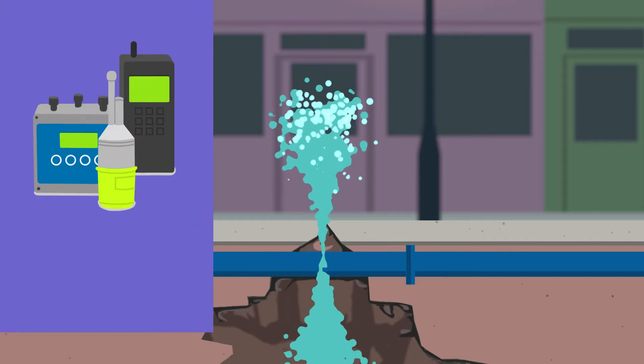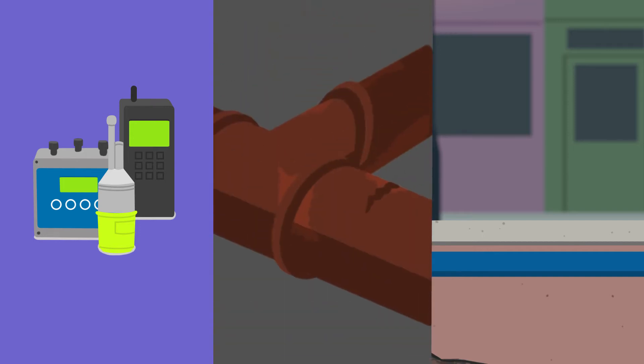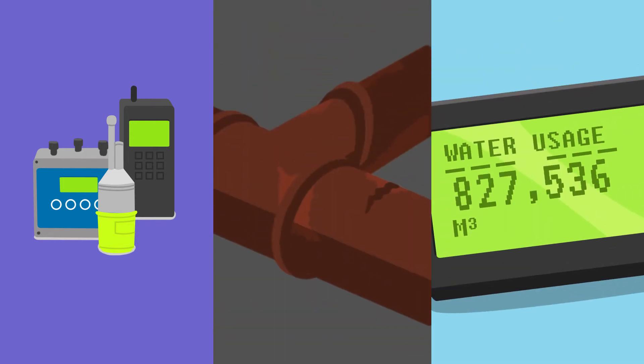Despite advances in technology and detection, leakage remains an intractable and worsening problem as networks age and demand increases. It's hard to find until the leak is well developed and damage is already extensive.